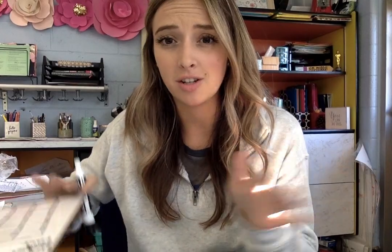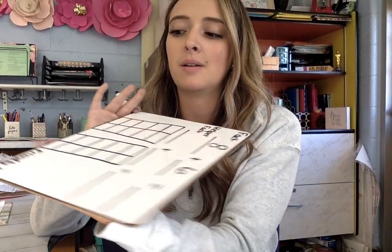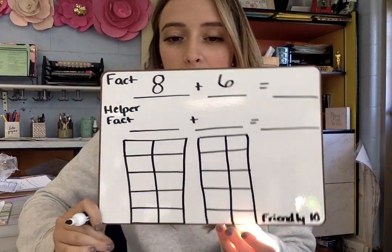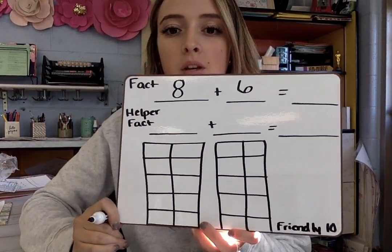Doubles are one way we can use a helper fact, but that's not all. You also have that friendly number 10. Knowing your combinations to 10 is something you worked on all last year. Now we're going to use it to help us.